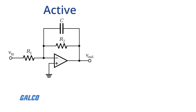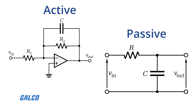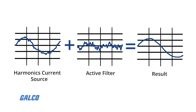Active filtering relies on components that require their own source of power to work. The operating principles of active filters are the same as those of passive filters, except they do it without inductors. They implement transfer characteristics to a system, allowing signals with certain frequencies to pass while blocking the rest.